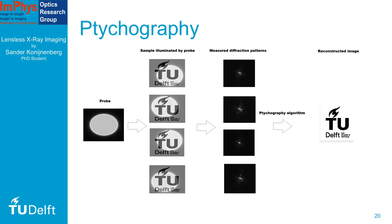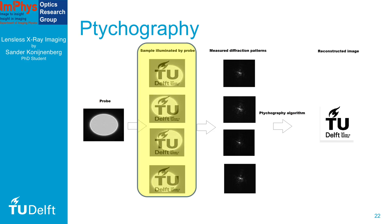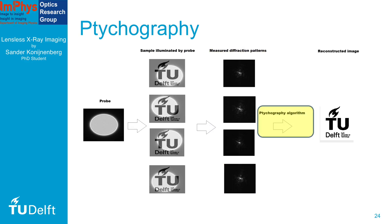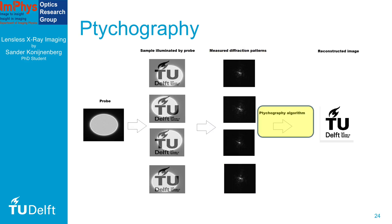One method for lensless imaging is called ptychography. In this method, we illuminate a sample with a bundle of light called the probe. We shift the probe to several positions across the sample, and for each position, we perform a measurement. In ptychography, we use this set of measurements to reconstruct an image of the object.